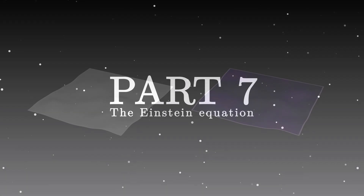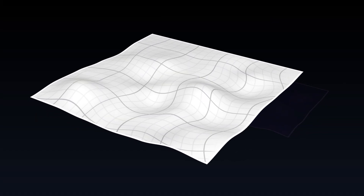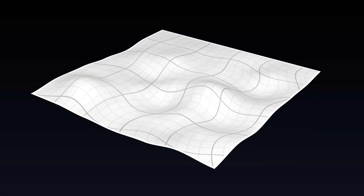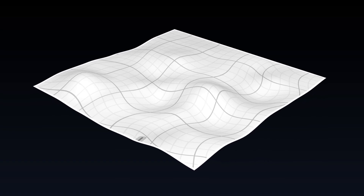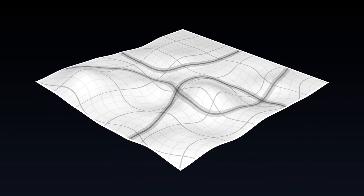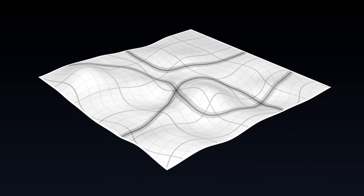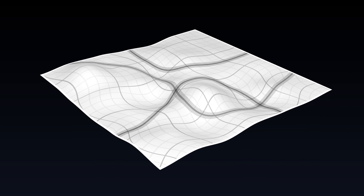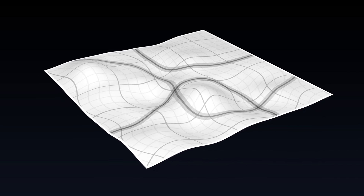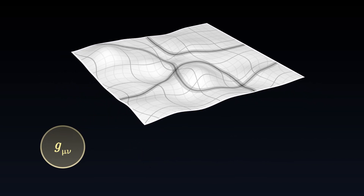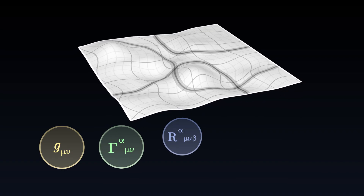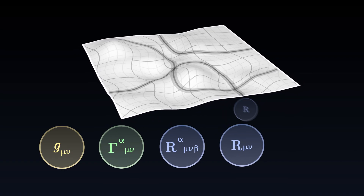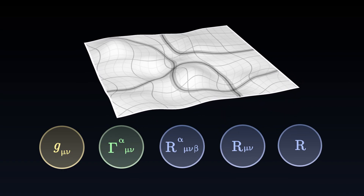Our mathematical model is finished. On the one hand, we know how to describe a space-time geometry, its curvature, and to deduce how objects naturally move thanks to the geodesic equation. For this, we have developed a whole set of mathematical tools, such as the metric tensor, the Christoffel symbols, the Riemann curvature tensor, the Ricci tensor, and the Ricci scalar.